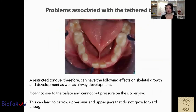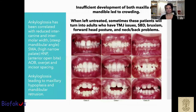A restricted tongue can have the following effects on skeletal growth and development as well as airway development: it cannot rise to the palate and cannot put pressure on the upper jaw. This can lead to a narrow upper jaw that does not grow far enough forward. Issues of insufficient development of both maxilla and mandible lead to crowding. When often left untreated, these patients can turn into adults who have TMJ problems, sleep-disordered breathing, OSA, and forward head, neck, and back posture problems.